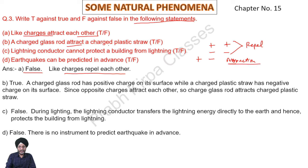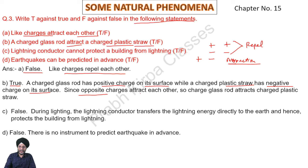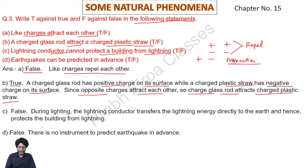A charged glass rod attracts a charged plastic. Answer: True. A charged glass rod has a positive charge on its surface, while a charged plastic has a negative charge on its surface. Since opposite charges attract each other, the charged glass rod attracts charged plastic. Next: Lightning conductor cannot protect a building from lightning. Answer is False.